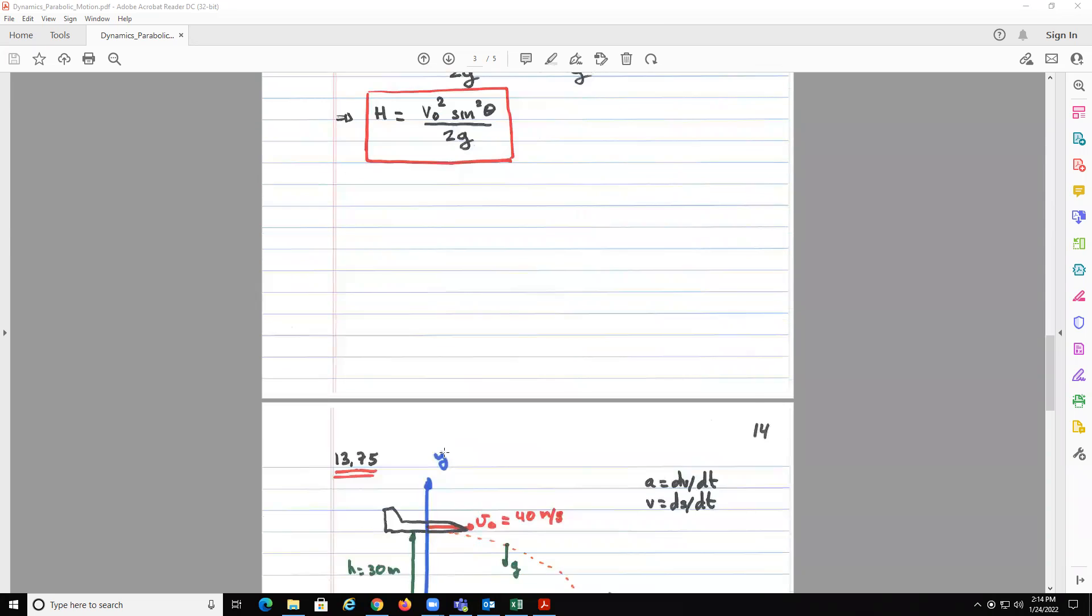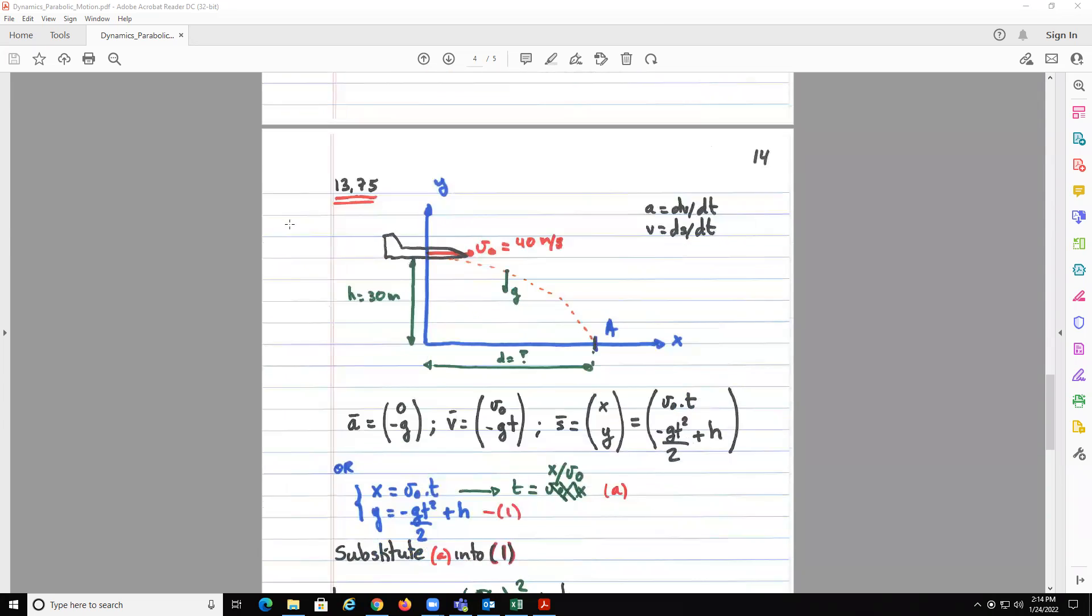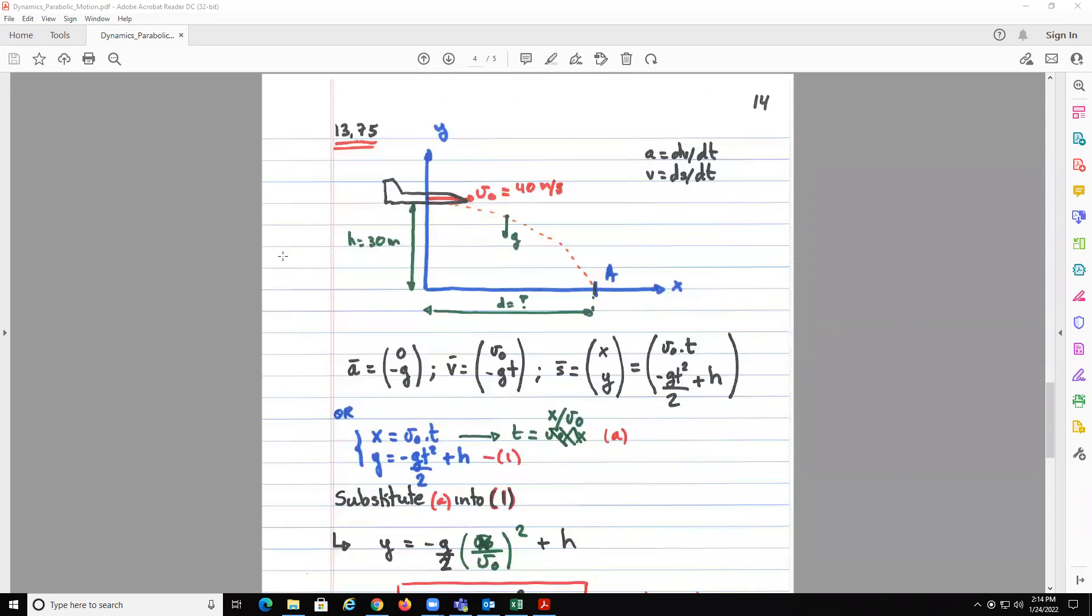I think the best thing to understand this is to do a quick application, so this is a problem on the textbook, but basically what we have is an airplane flying at a constant speed of 40 meters per second. It's going to drop something from a height of 30 meters, and we are asked to find what is the distance d. And the only force is gravity, so again, we don't need to memorize equations, we start from this equation, so a equal minus g, initially we integrate this.